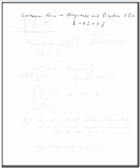Change the vector a to Cartesian form. a is 4i plus 3j. We want to find its magnitude and its direction.